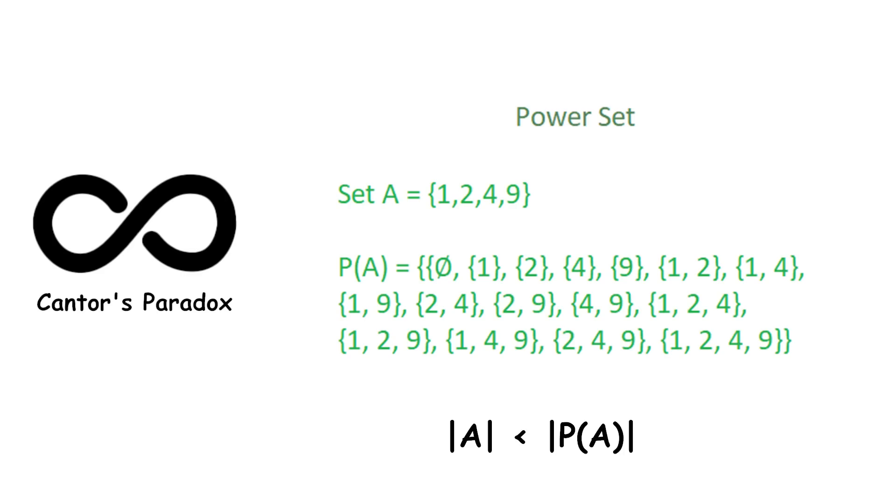This discovery was surprising, because intuitively we might think that the whole set A should have the most things, since it contains everything. But Cantor demonstrates that in terms of numbers, cardinality, the collection of subsets can be larger.